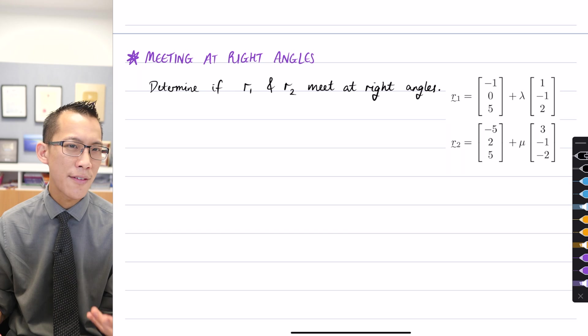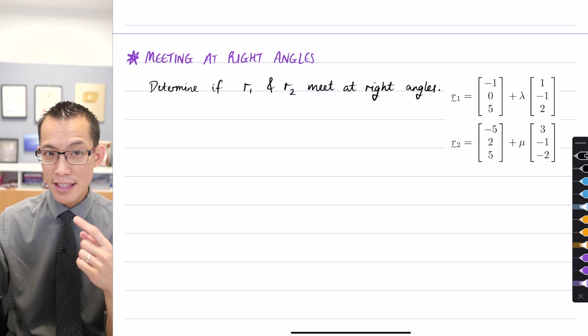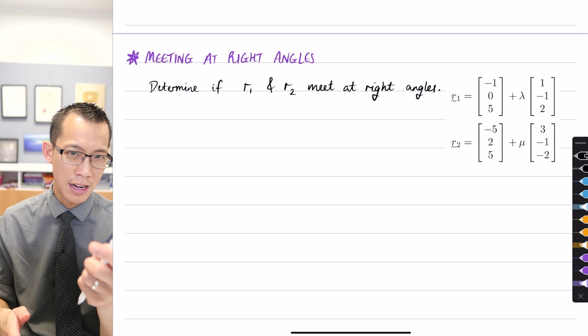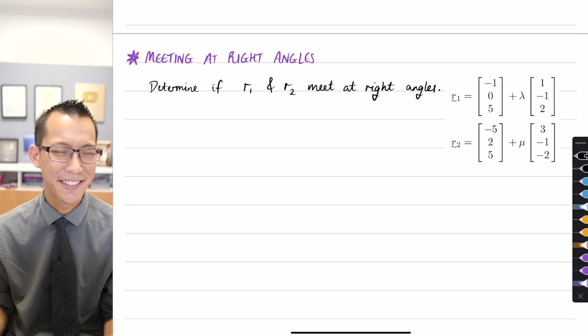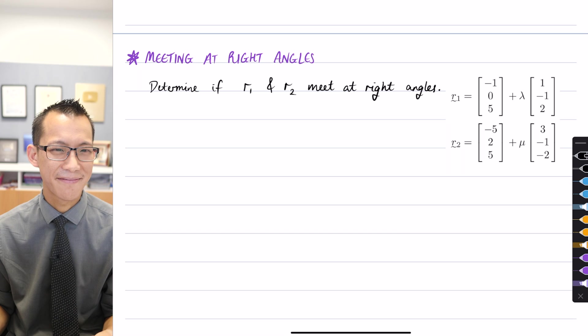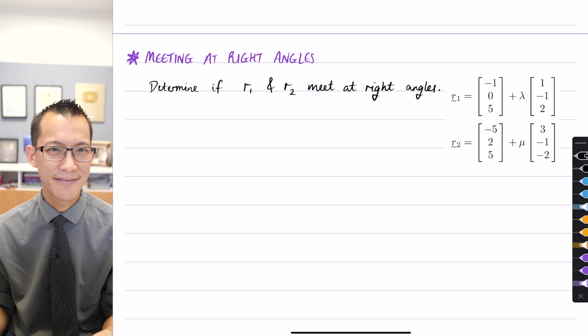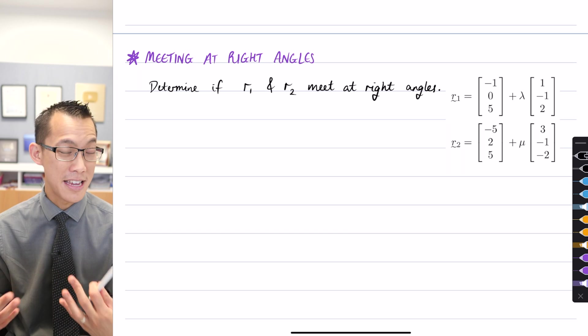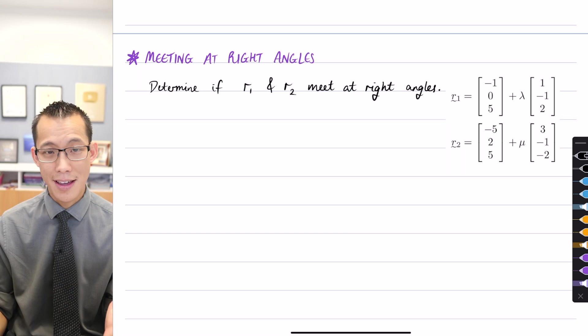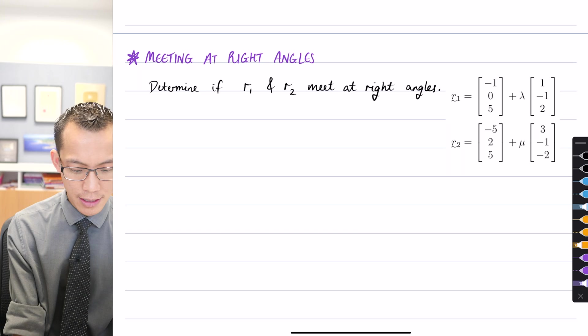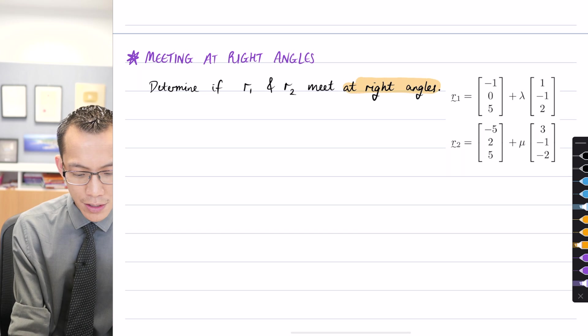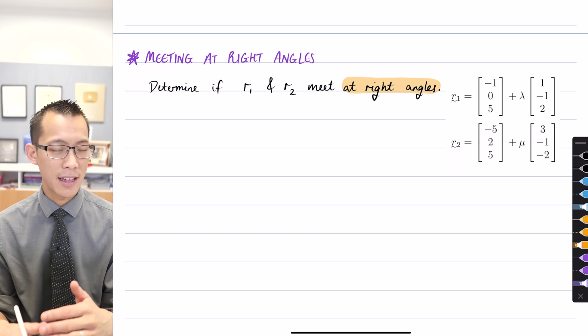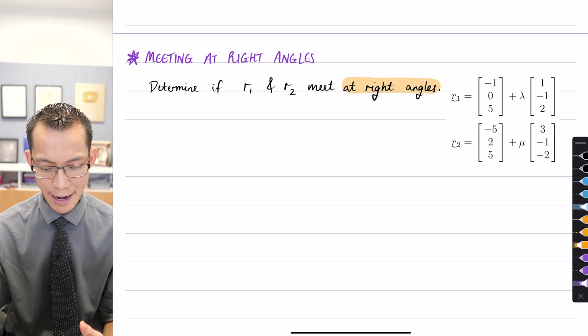Now in two dimensions, what would we do with a question like this? If I gave you two lines and asked do they meet at right angles, what would you do? Yeah, you just have a look at the gradients. And what would you do with the gradients? You want the product to be equal to negative one, right?